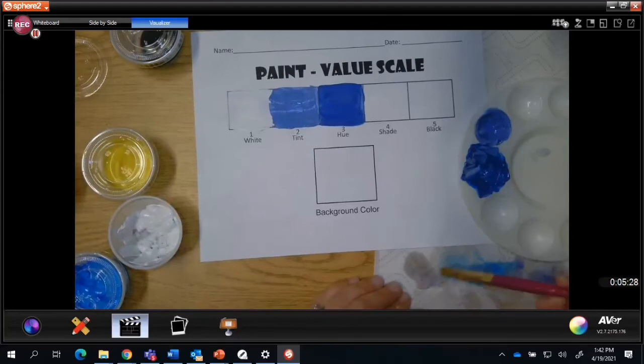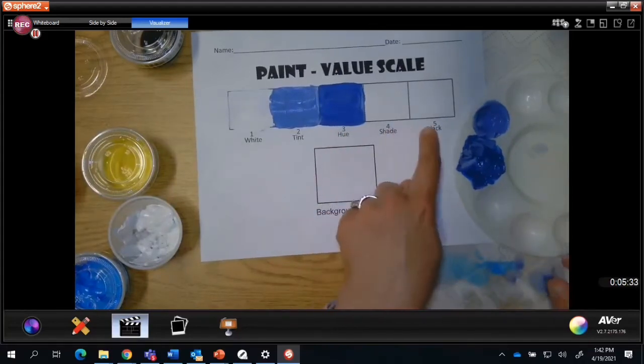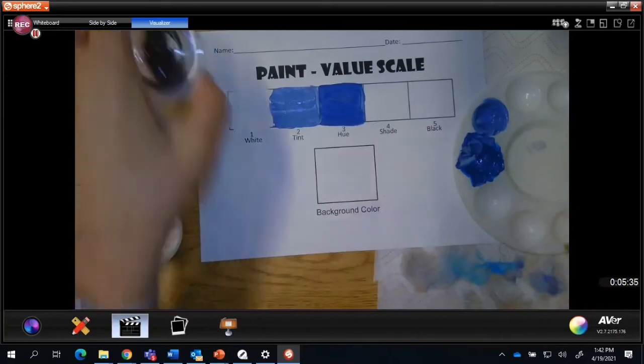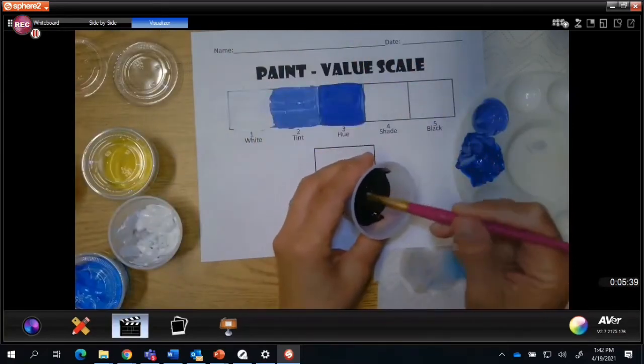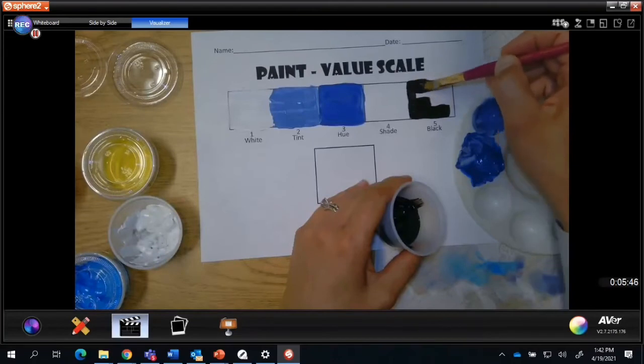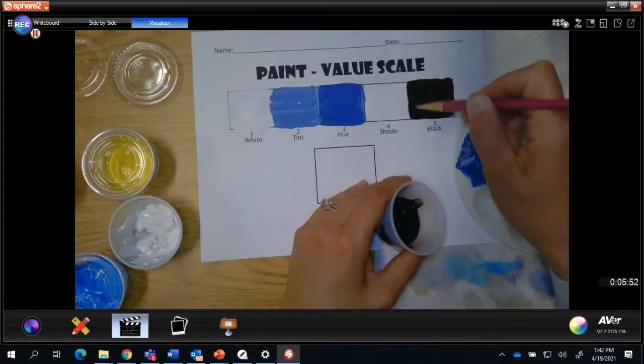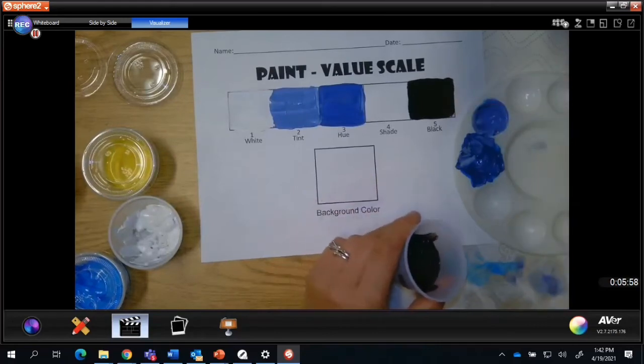Next I'll rinse my brush and now I'm ready to make my black. I'm going to paint my black in. Now again, if you're using the color yellow, you might want to use a gray, a dark gray, for your number five. Yellow is such a light color that if you go all the way to black, it might be too much contrast.